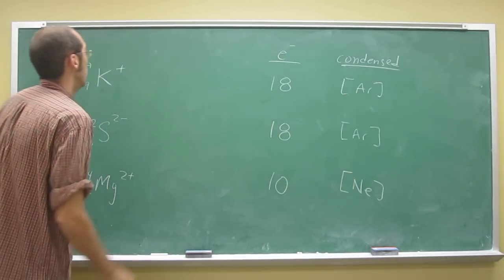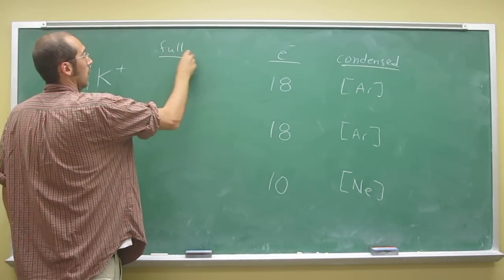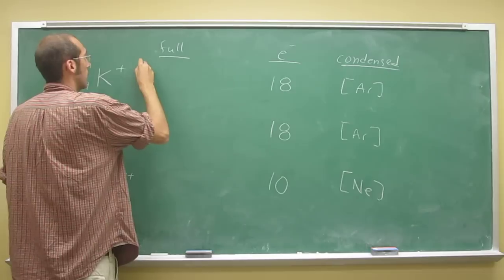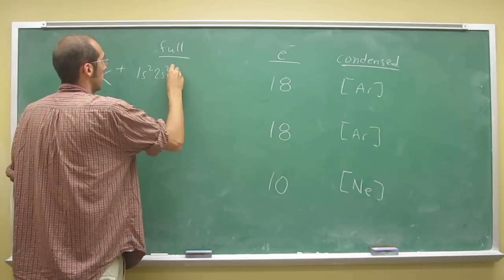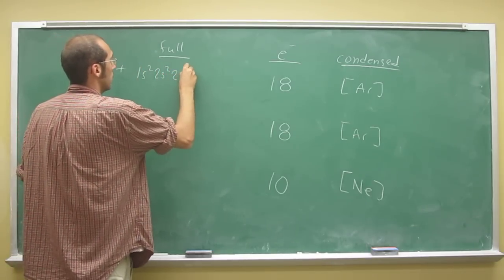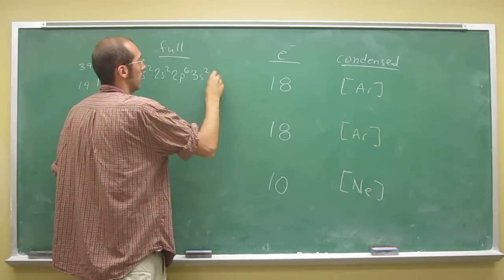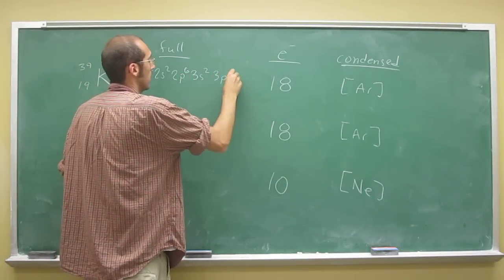So if we do the full, argon is going to be 1s2, 2s2, 2p6, 3s2, 3p6.